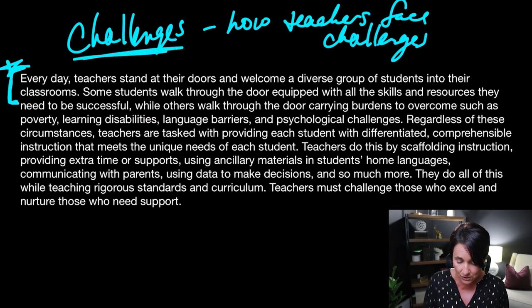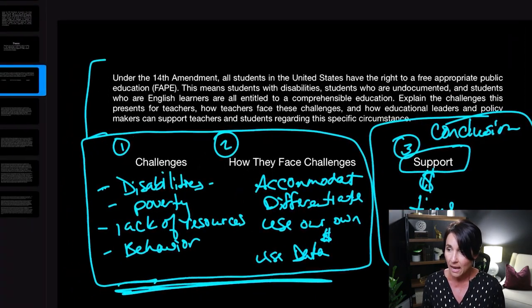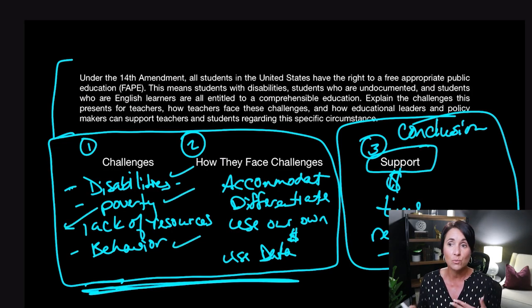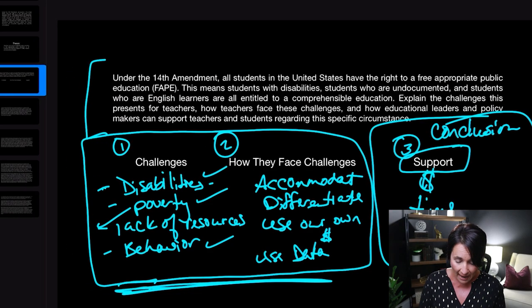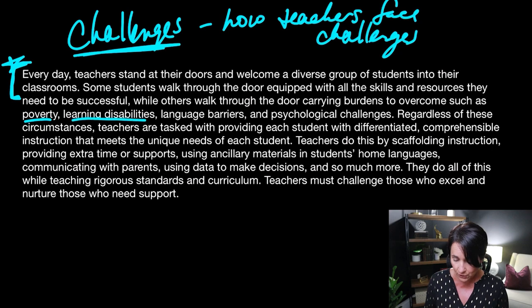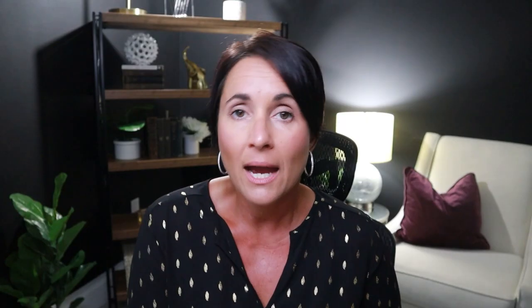Then we get into our specific challenges. Over here on my scratch paper, our challenges were going to be disability, poverty, lack of resources, and behavior. If I go back to my detail paragraph, I can see that I did that — some students walk in with all the resources they need, while others walk in overcoming poverty, learning disabilities, language barriers, and psychological challenges. We always want to be specific — we don't want to just say 'teachers have lots of challenges,' we need to name them. Specificity is very, very important.